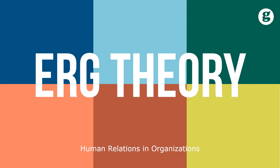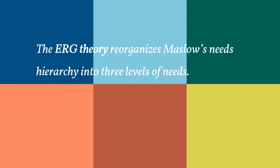Let's take a look at the ERG theory. The ERG theory recognizes Maslow's hierarchy of needs and reorganizes it into three levels: existence, relatedness, and growth.